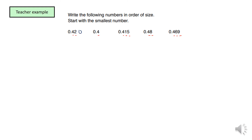On the second one I will add two zeros — now we've got three decimal places. On the third one you've already got three. On the fourth one I'll add one zero so we've got three decimal places. And the fifth one already has three decimal places.